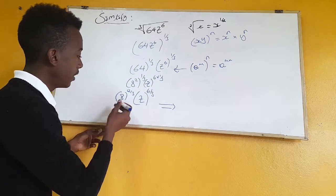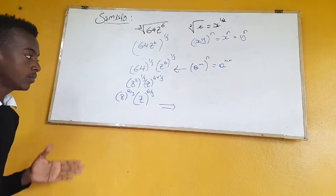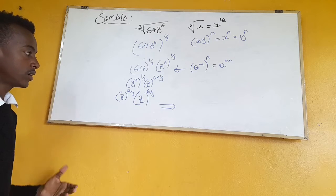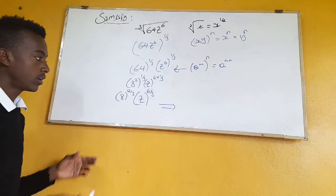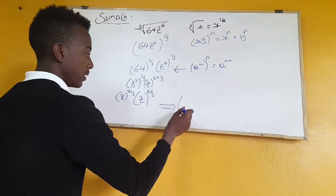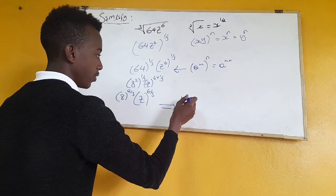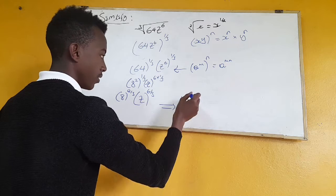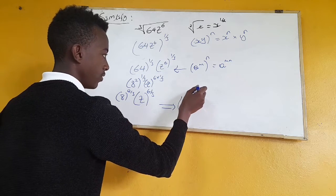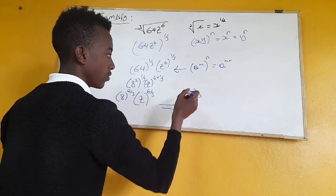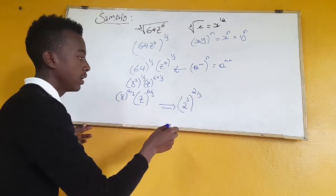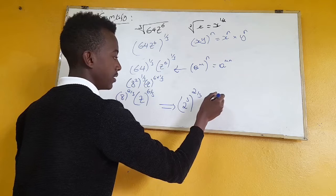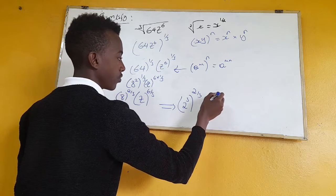Because that is — we write it in an exponential form: 8 to the power of 3, to the power of 2 over 3, times the square.